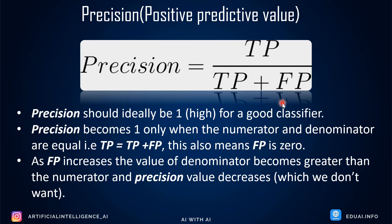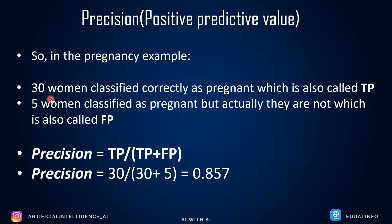Applying the precision formula to our example: 30 women are correctly classified as pregnant (true positives) and 5 women are incorrectly classified as pregnant (false positives). So precision = 30 / (30 + 5) ≈ 0.857, which is approximately 85%. Simple and straightforward.